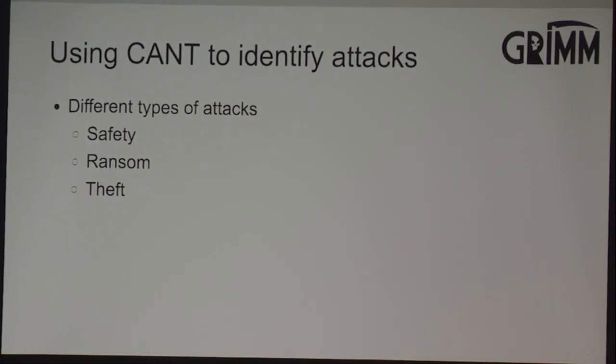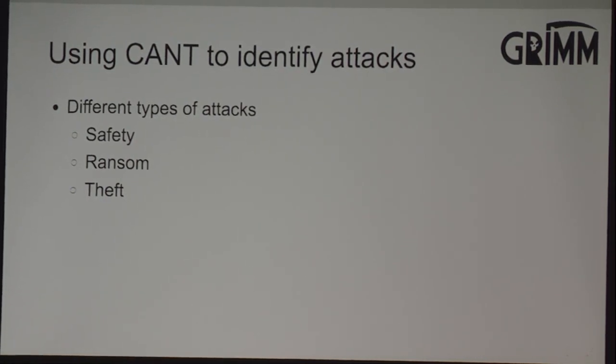There are essentially three different types of attacks against vehicles: attacking the safety of a vehicle to make it less safe to operate or take control over it; ransomware — for example, 'you can't go more than 25 miles per hour unless you give me three Bitcoin'; and theft. There are security camera videos on YouTube of people stealing cars using these higher-tech tools — using the CAN bus to unlock the vehicle, start it, and drive it away. This is possible because sometimes auto manufacturers leave their CAN bus accessible from the outside of the vehicle.